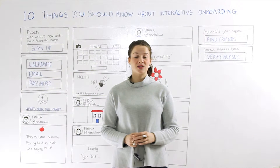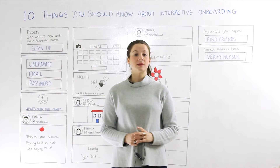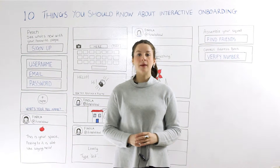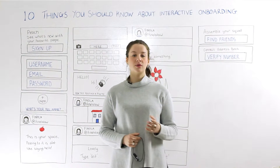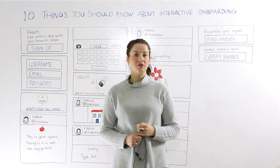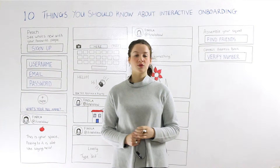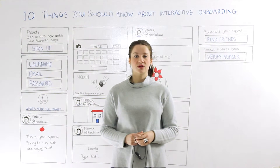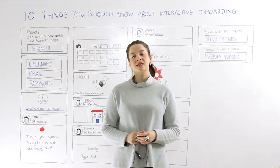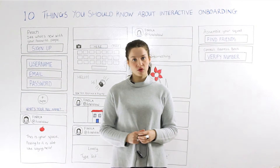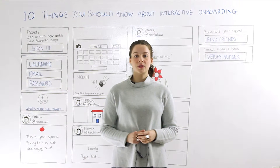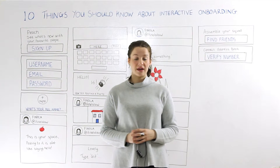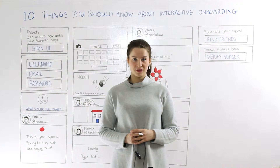One of the latest apps to join the app squad is Peach. It's a social networking app that allows you to share what's happening in your life with your friends who are also using the app. It was created by the co-founder of Vine and has been described as a cross between Twitter and Slack. So let's take a look at how they onboard their users.